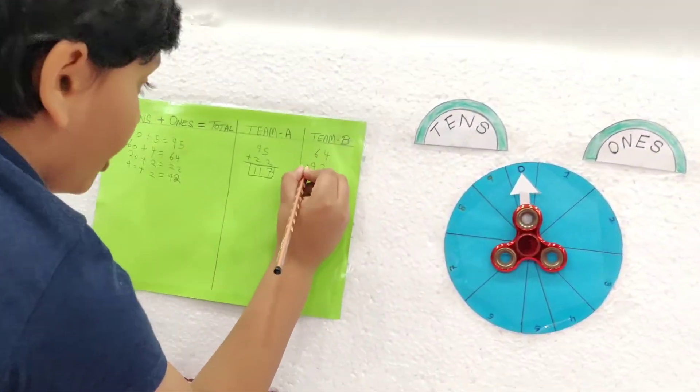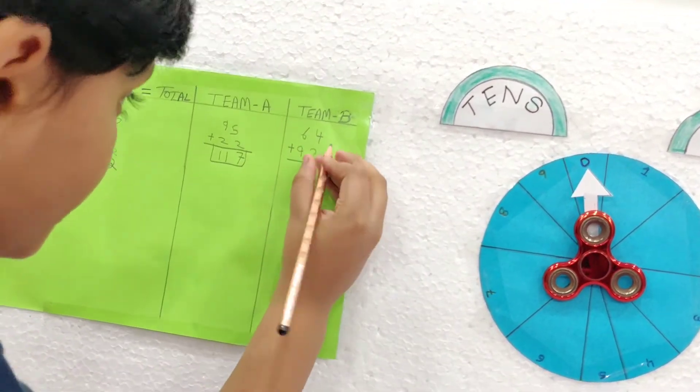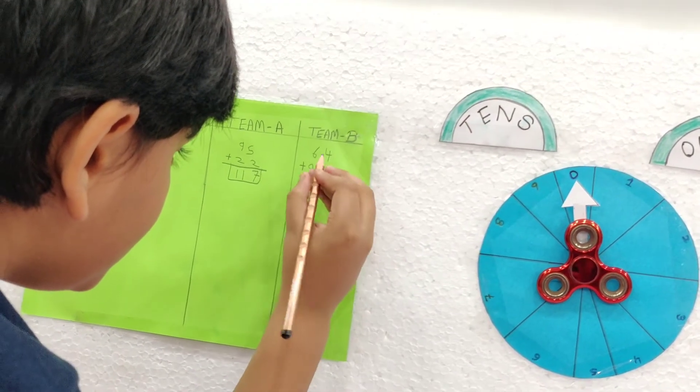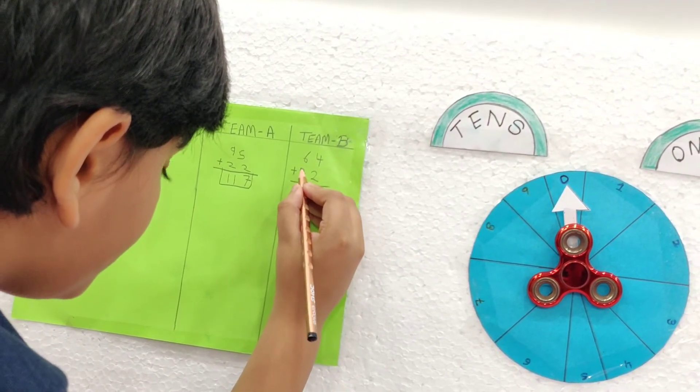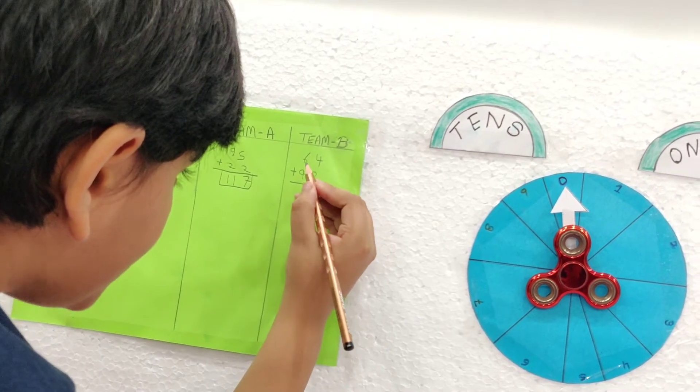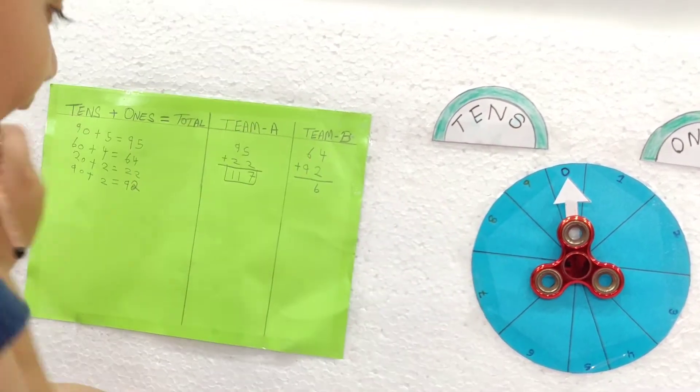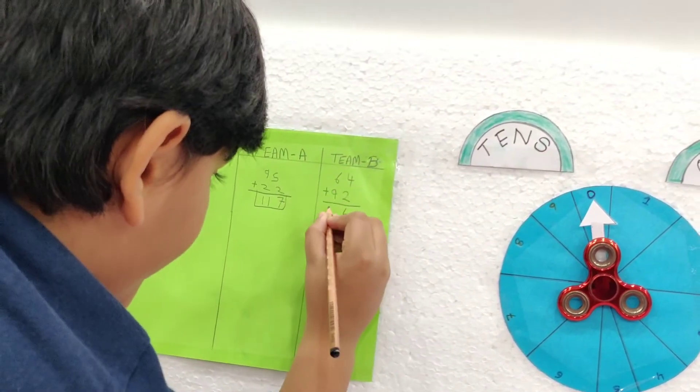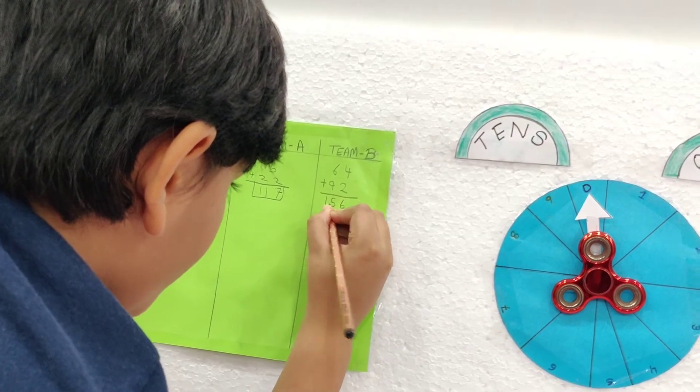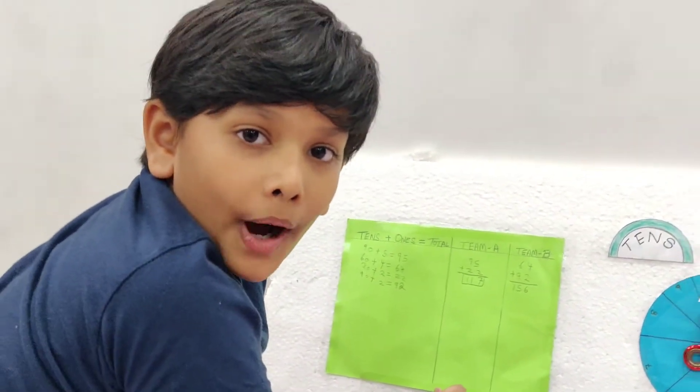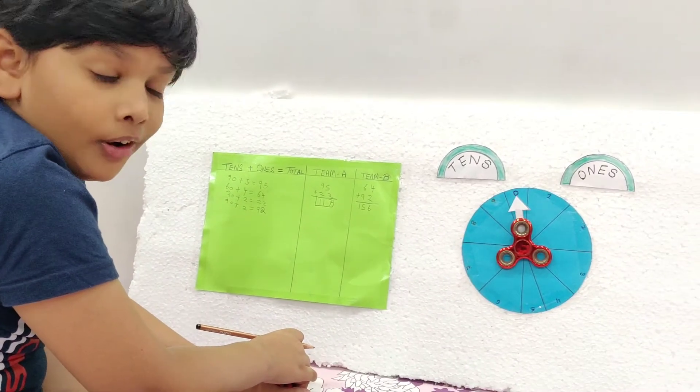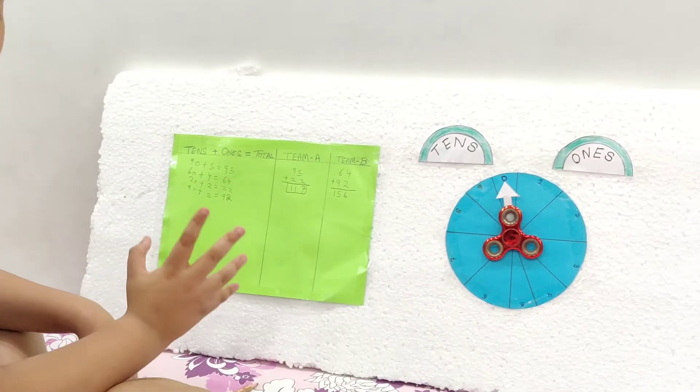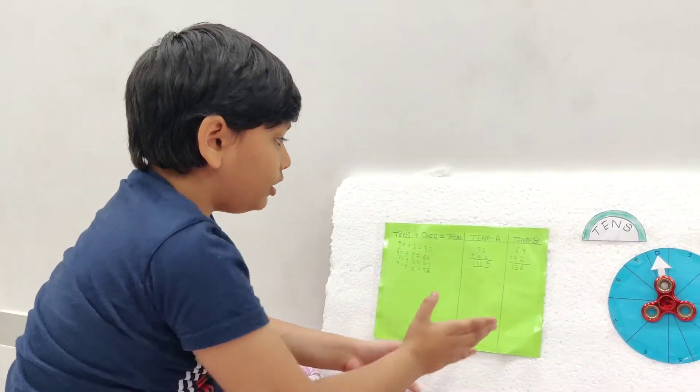Now we will do it for B team also. 4 plus 2 is 6. We have to do 9 plus 6, it is 15. Oh my god. I think that A team will win, but B team won?